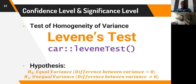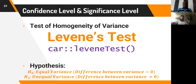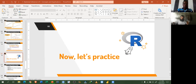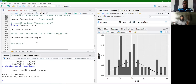We formulate the hypothesis for the Levene's test: the null hypothesis states that there is equal variance — meaning the difference between variances equals zero. The alternative hypothesis states that there is unequal variance. Equal variance can be reinterpreted as homogeneous variance, and unequal variance as non-homogeneous variance. Let's go into R and practice.